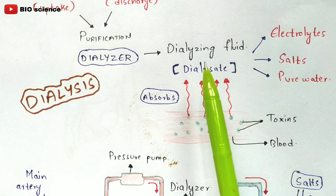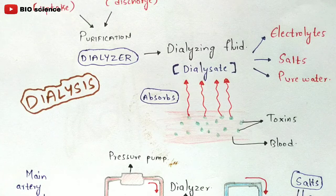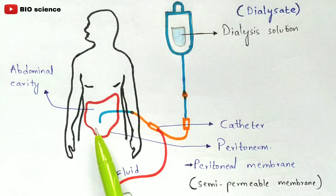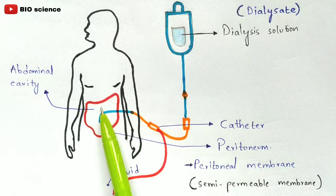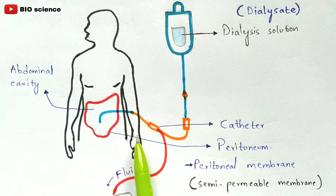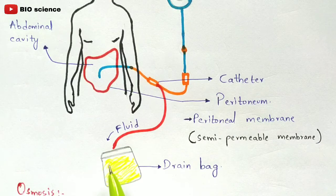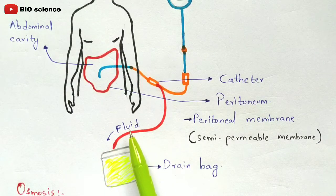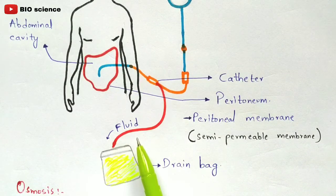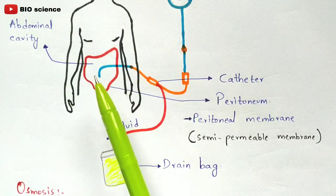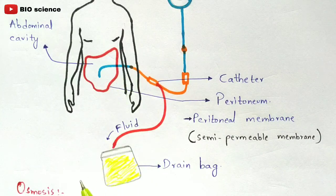Once the dialysate solution is introduced into the peritoneum, the impure blood is converted to pure form because all toxins are absorbed by the dialysate. The absorbed waste fluid — containing waste products, salts, water, and nitrogenous waste material — is then sent into a drain bag, leaving pure blood in the abdominal cavity.